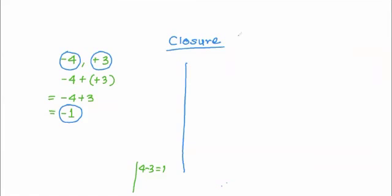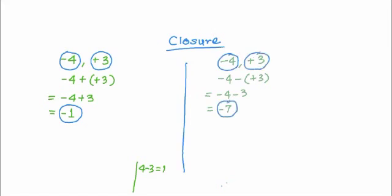Let's take minus 4 and plus 3 and subtract them: minus 4 minus plus 3. Minus 4 stays as it is. Minus and plus are different signs, so the resultant sign is minus. Minus minus: same signs, so the operation is addition — 4 plus 3 is 7. The sign of the greater number is 4, and its sign is minus, so the answer is minus 7. Minus 4, minus plus 3, and minus 7 are all integers, so integers are closed under subtraction as well.